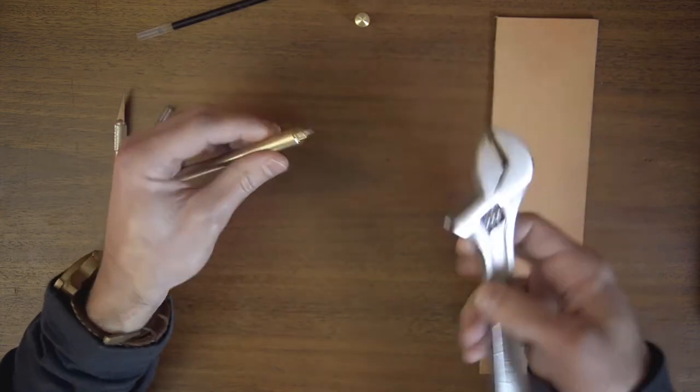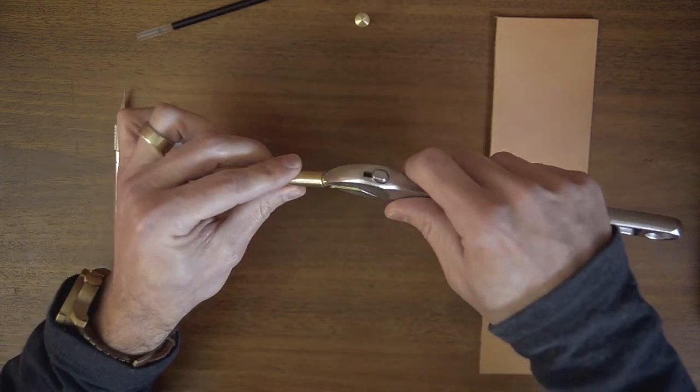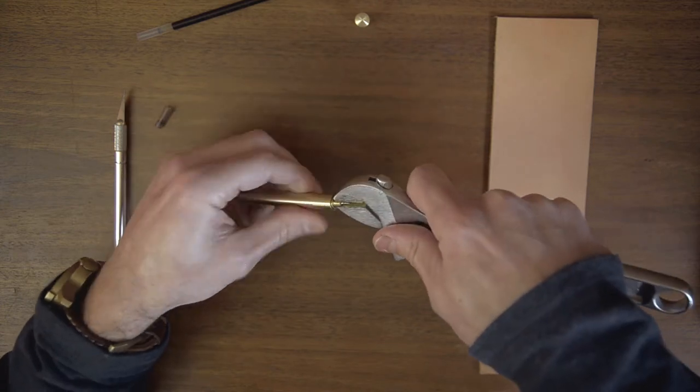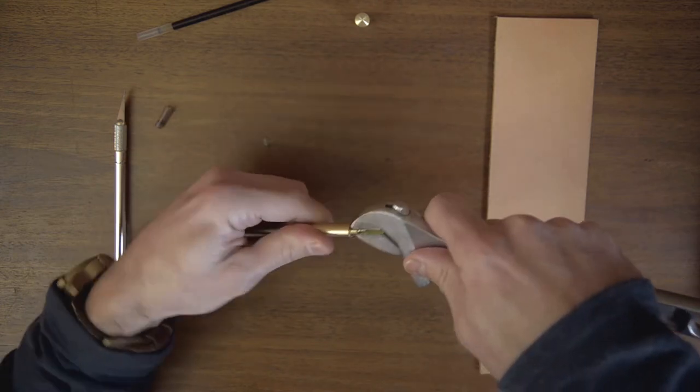Get the threaded insert started with your fingers and then take your adjustable wrench again, clamp down on the flats, and tighten it down snug.